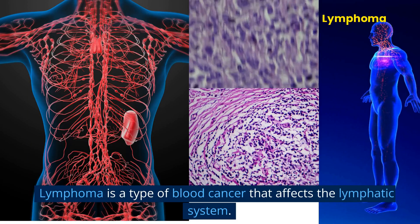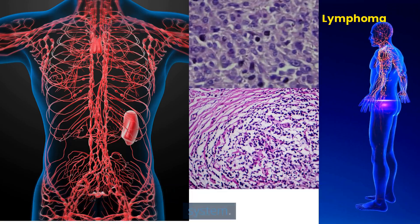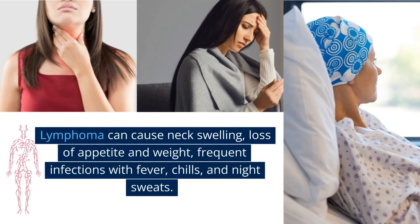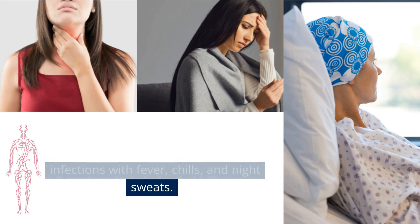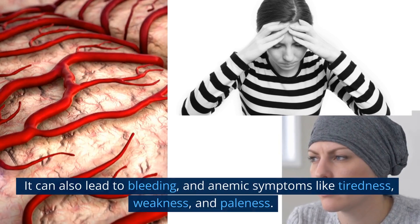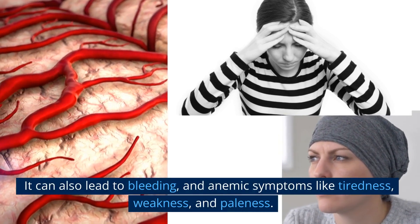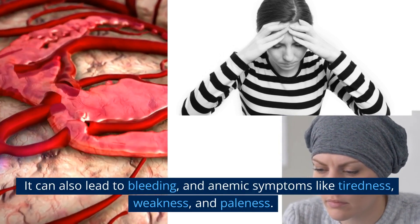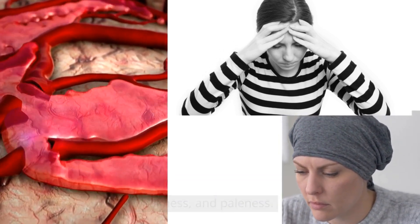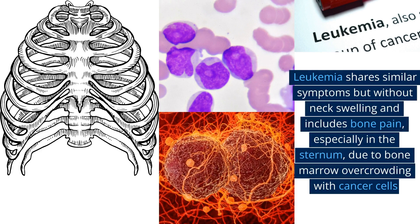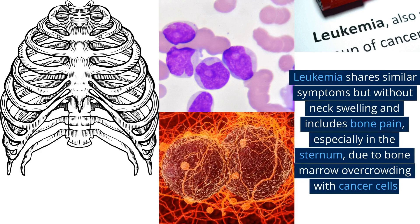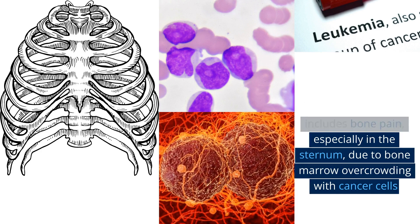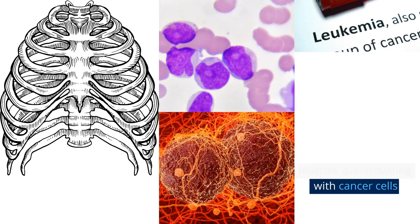Lymphoma is a type of blood cancer that affects the lymphatic system. It can cause neck swelling, loss of appetite and weight, frequent infections with fever, chills, and night sweats. It can also lead to bleeding and anemic symptoms like tiredness, weakness, and paleness. Leukemia shares similar symptoms but without neck swelling, and includes bone pain, especially in the sternum, due to bone marrow overcrowding with cancer cells.